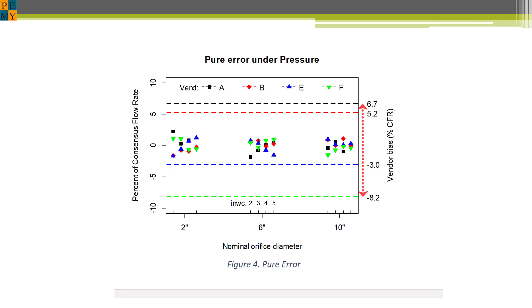This chart shows the vendor bias and compares it to pure error or noise. Again, this demonstrates how the vendor measurements are discrepant well beyond any random noise in the measurement process.